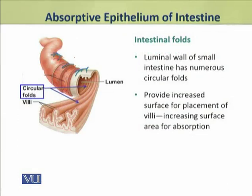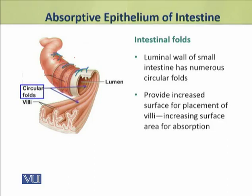The intestinal folds. If we see the luminal wall of the small intestine, it has numerous circular folds. These folds provide increased surface for the placement of villi, which substantially increase the surface area for absorption.